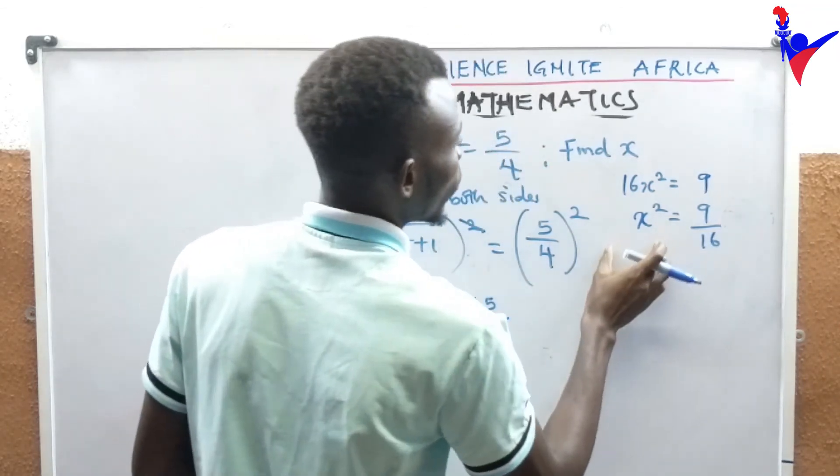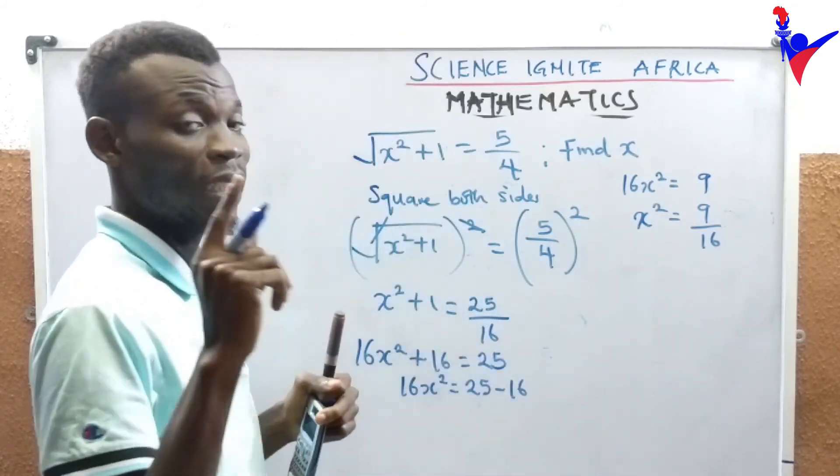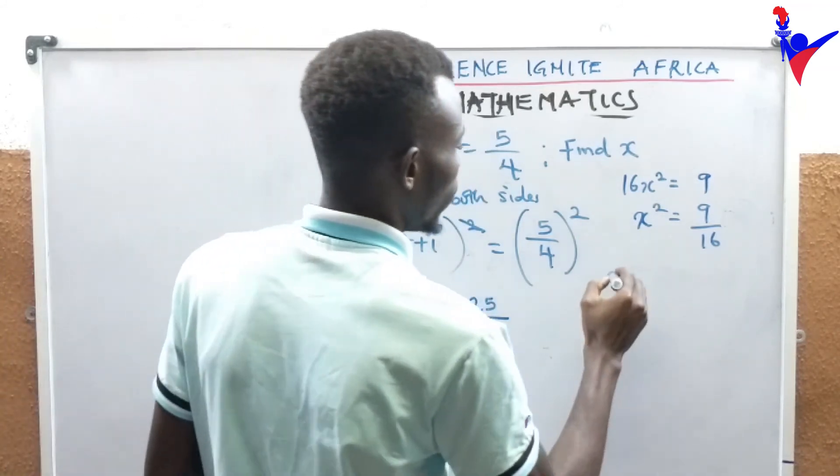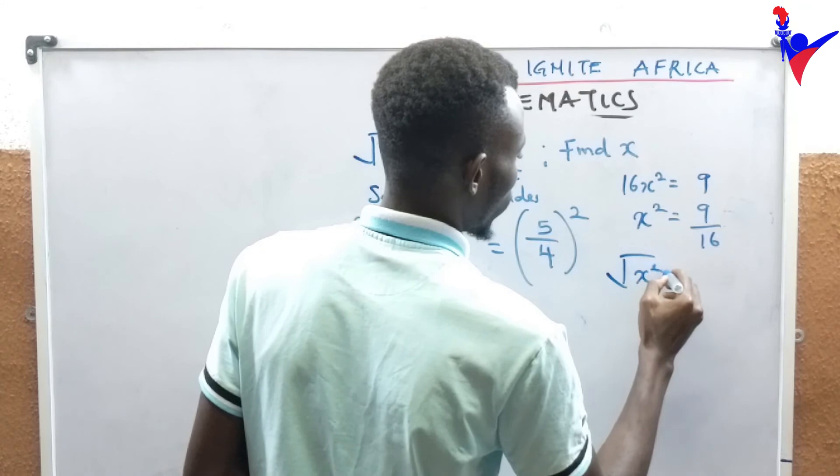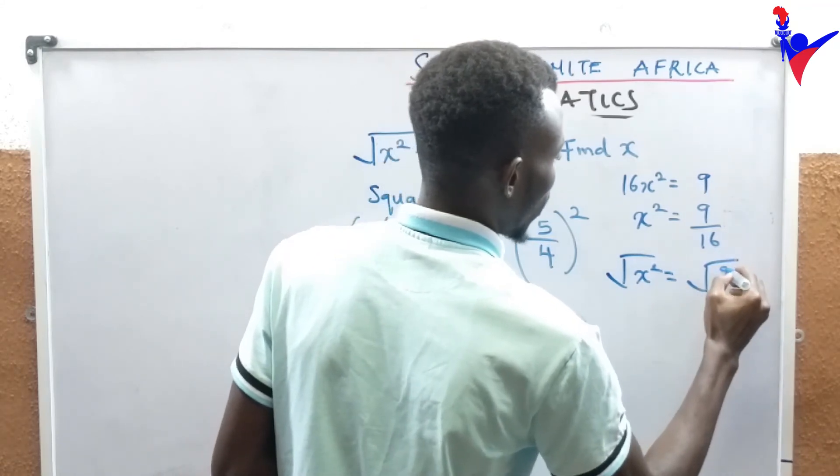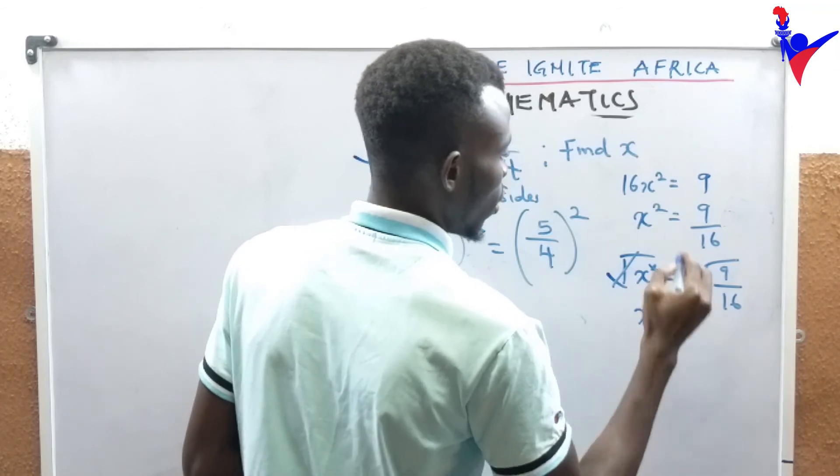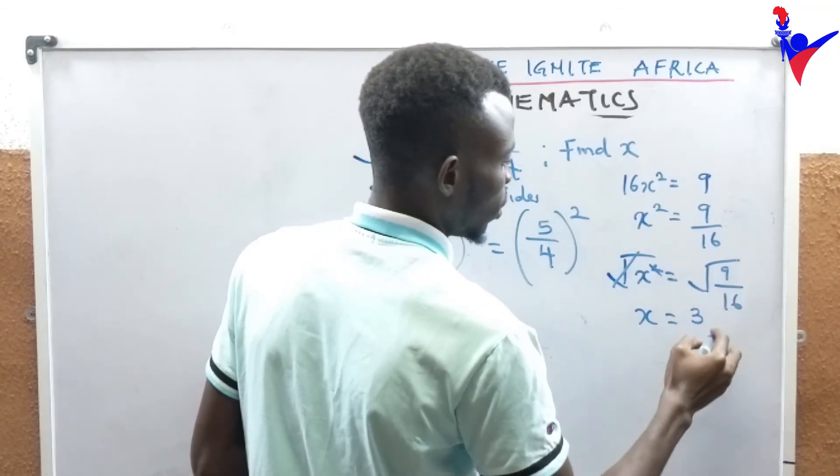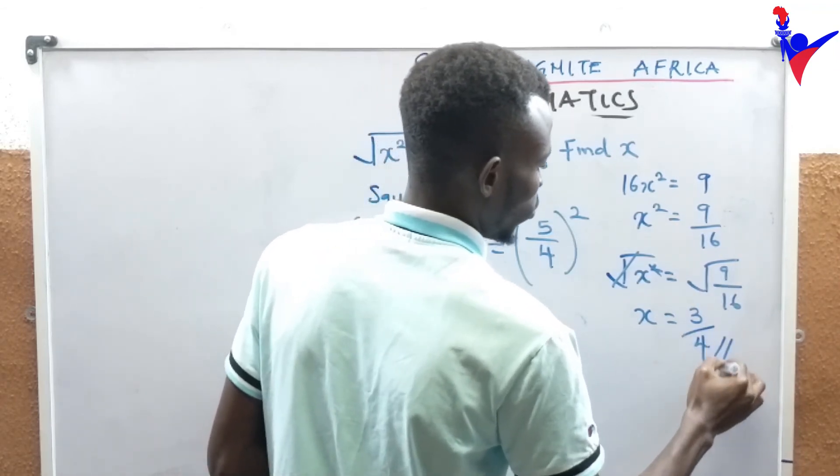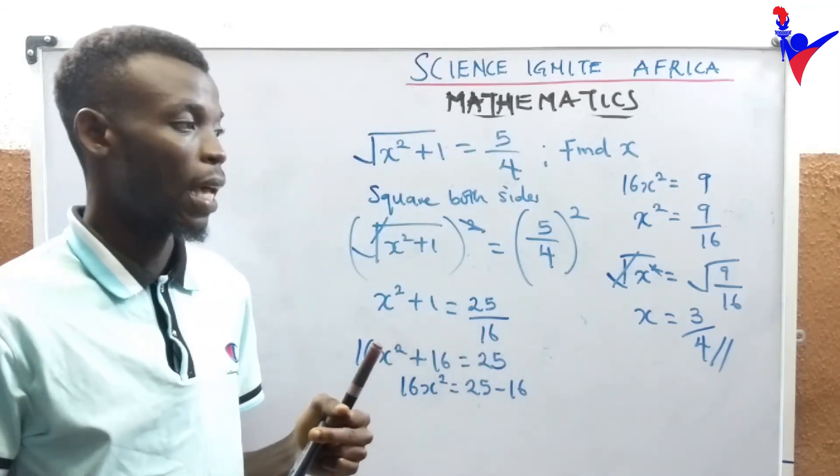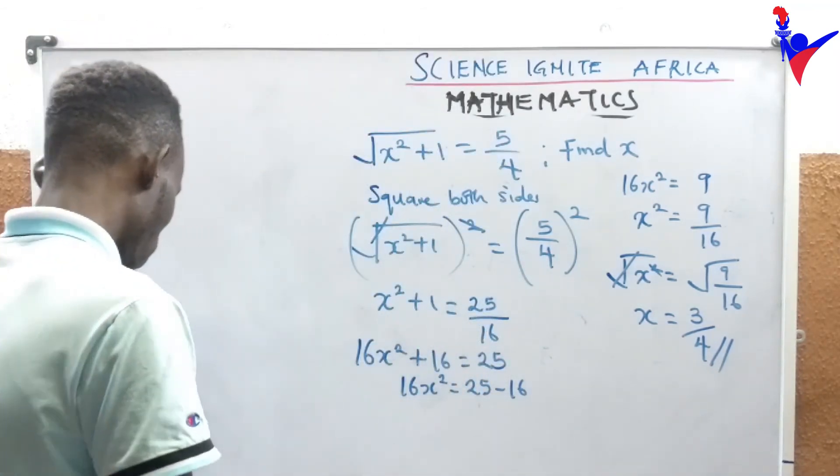x squared, but x must stand alone. We now have x equals square root of 9 divided by 16. This canceling, we have x. What is root 9? 3. What is root 16? 4. So we have our x as 3 over 4.